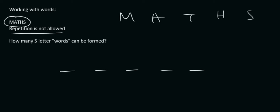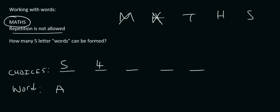They say repetition is not allowed. So for the first letter, how many choices do we have? Well, there's five. Let's say we chose an A — so A is gone. For the next one, we have four options; let's say we chose an M. Then there are three options and we chose H. Then there are two options available — either T or S — let's say we chose S. And then there's one option left, which is obviously T.